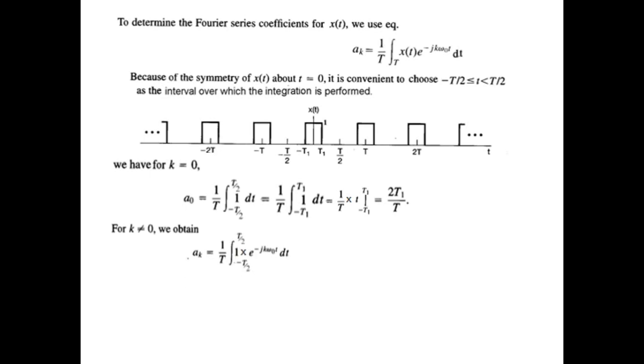Now let's see when k ≠ 0. When k ≠ 0, in this equation we put x(t) = 1. So this is the integral we have, and we again adjust the limits to -t1 to t1 because there is no signal present on the two sides. Now we take the integral.